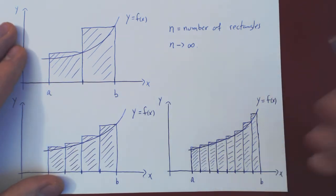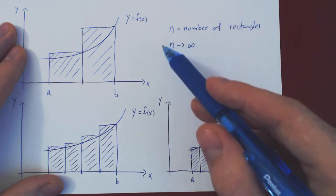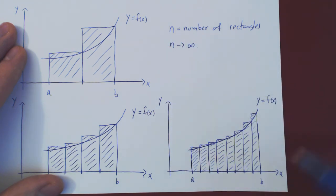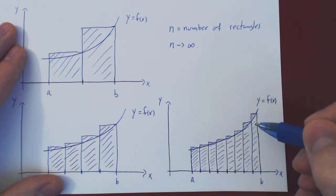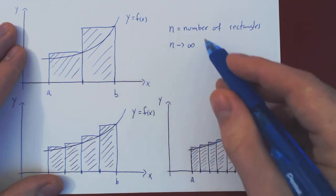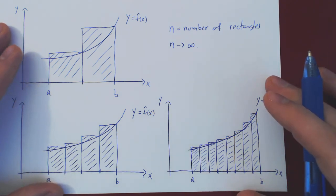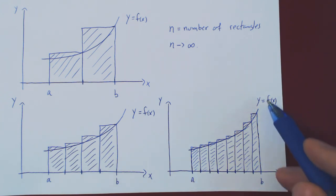We are left with two other questions. We understand that we must take more and more rectangles to get a better and better approximate area under the curve, and then let n go to infinity to obtain the exact area. So: first, how do we systematically subdivide any interval from a to b into n equal intervals to give us n rectangles? And how do we systematically evaluate the area of each rectangle, add them up, and then let n go to infinity to get the exact area? This will be the topic of our next video — how to set up these sums of areas of rectangles systematically for any interval a to b and any function f of x.